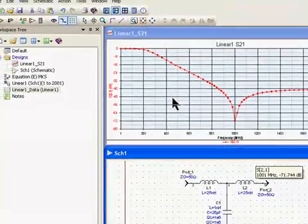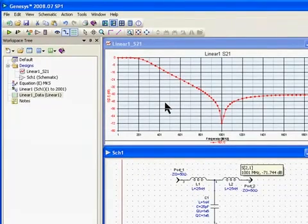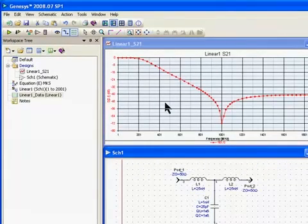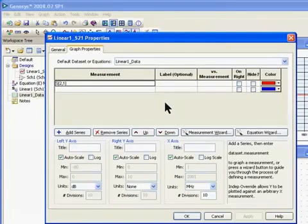So now I have my graph. If I wanted to add S11 onto the graph, I can double click on the graph. It opens up the graph properties box, and we can use our measurement wizard to add a measurement.